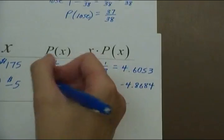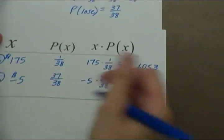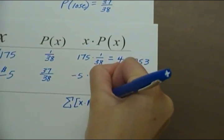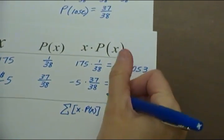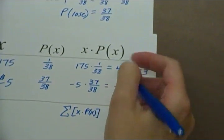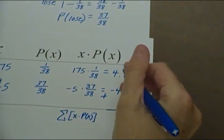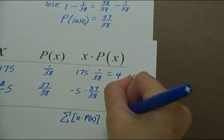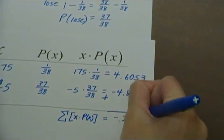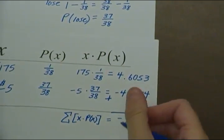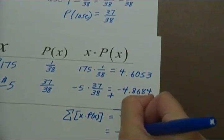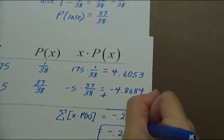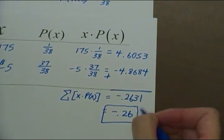Now for the sum. So the formula for expected value is the sum of x times P of x. So now we add these two together, and that will get you your expected value, which is negative .2631. This is money related. We would round to the nearest cent. So you are expected to lose $0.26.